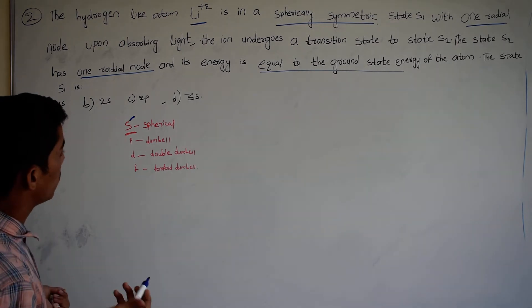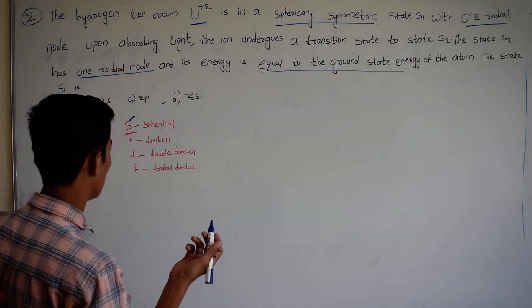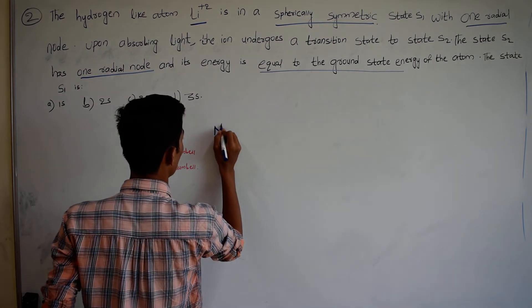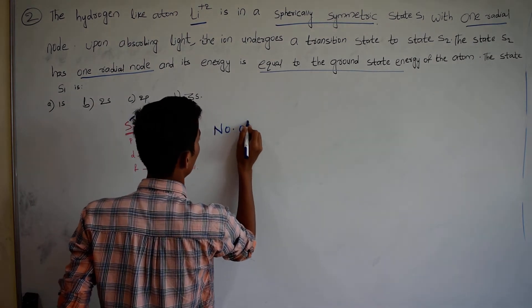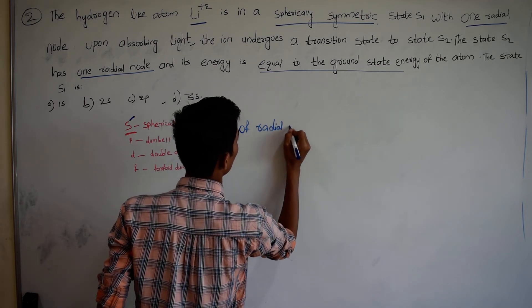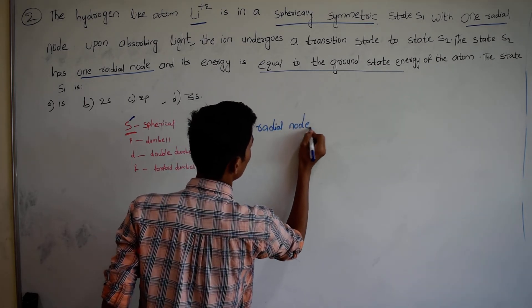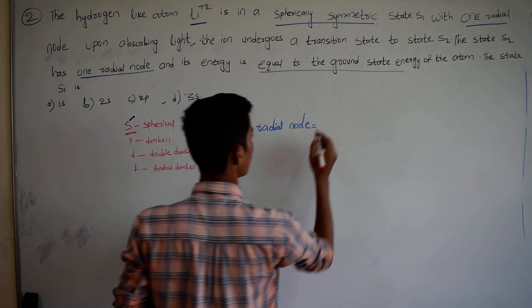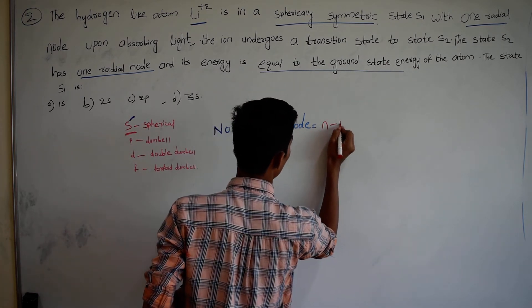If I have radial node, the number of radial nodes is equal to n minus l minus 1.